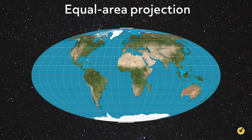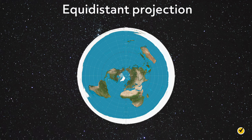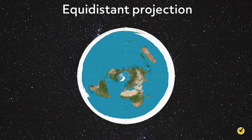Equidistant maps show true distances only from the center of the projection or along a special set of lines. For example, an azimuthal equidistant map centered at the North Pole shows the correct distance between the North Pole and any other point on the projection. It shows the correct distance between the Pole and Copenhagen, and the Pole and Seattle, but it does not show the correct distance between Copenhagen and Seattle. It should be noted that no flat map can be both equidistant and equal area. Equidistant maps are useful for things such as determining the direction to aim your antenna when utilizing terrestrial point-to-point communication.